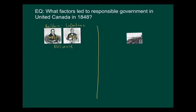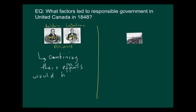Together they decided to put their interests together and promised to support one another. The French agreed that they would support their English Canadian colleagues with economic issues. In exchange, the English Canadian reformers pledged to cooperate in the goal of protecting the French language and French Canadian culture in Canada East. This was called the Baldwin-La Fontaine Alliance. They felt that combining their efforts and their power would help them achieve responsible government.